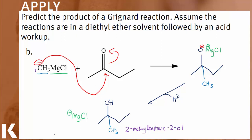One carbon in the Grignard plus four carbons in the reactant results in a total of five carbons in our alcohol product.